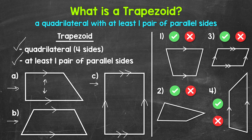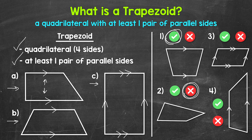Let's move on to numbers one through four, where we will determine if we have a trapezoid or not. A green check mark means yes, a red X means no. Taking a look at number one, we have a quadrilateral with one pair of parallel sides, so yes, this is a trapezoid. Moving down to number two, we have a quadrilateral but we don't have any parallel sides, so this is not a trapezoid — this is just a quadrilateral.